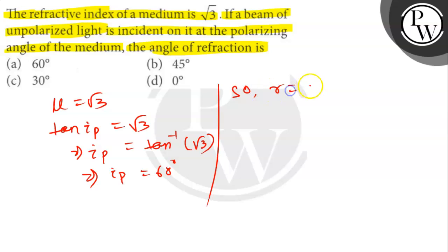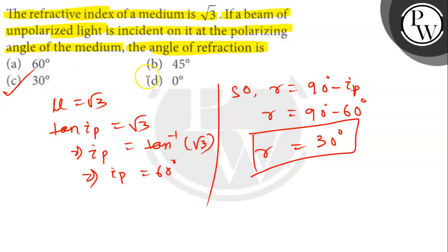So r is 90 minus ip. So r will be 90 minus 60 degree, which will be 30 degree. So r is 30 degree. Option number C is the correct answer. Thank you.